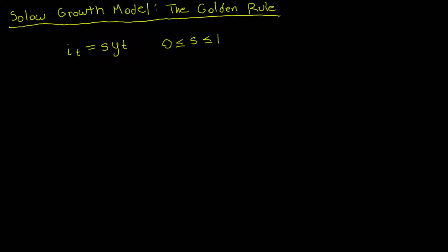The goal of the golden rule is to find the savings rate that maximizes consumption in a steady state. Through the resource constraint, consumption per capita is equal to GDP per capita minus investment per capita. Plugging in S times Y_t for investment and simplifying, we get consumption per capita equal to one minus S times GDP per capita. Consumption is basically what you have left over from production after you have invested.